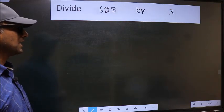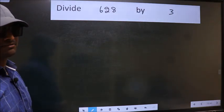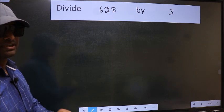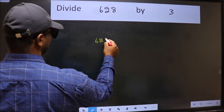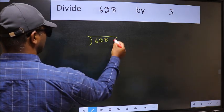Divide 628 by 3. To do this division, we should frame it in this way. 628 and 3 here.